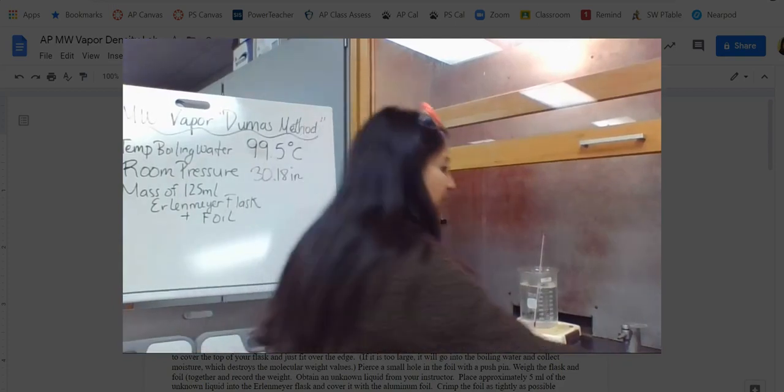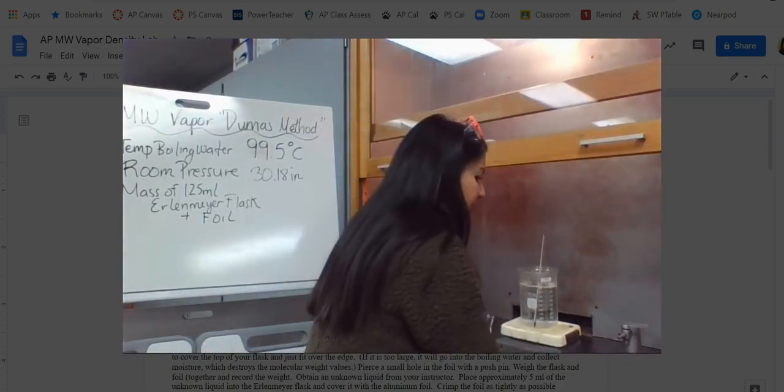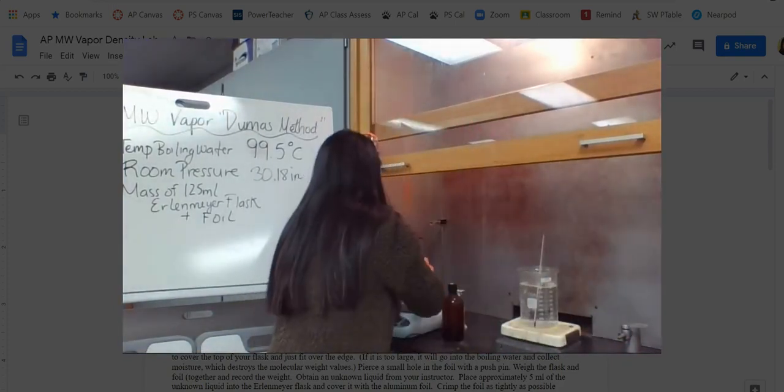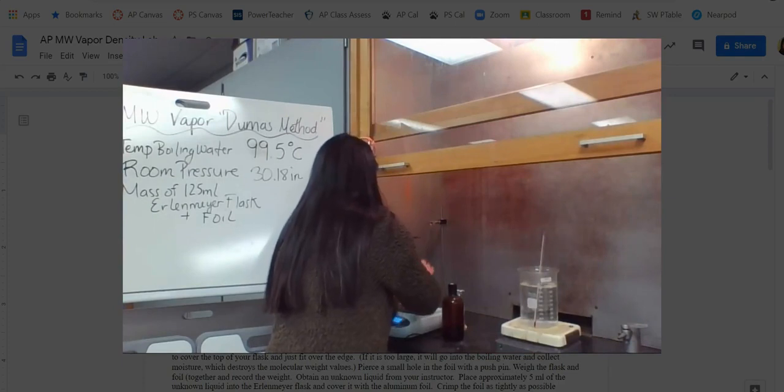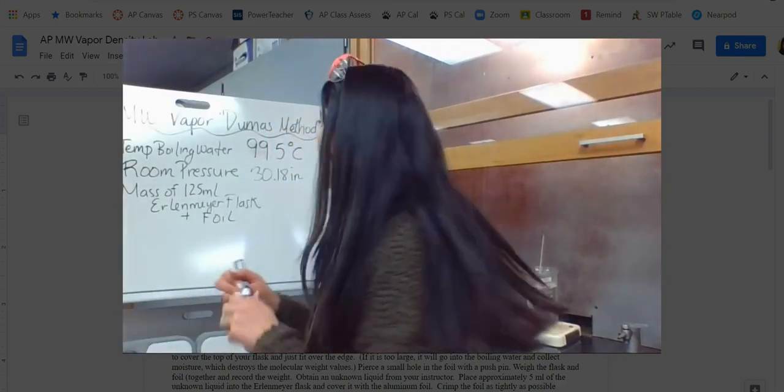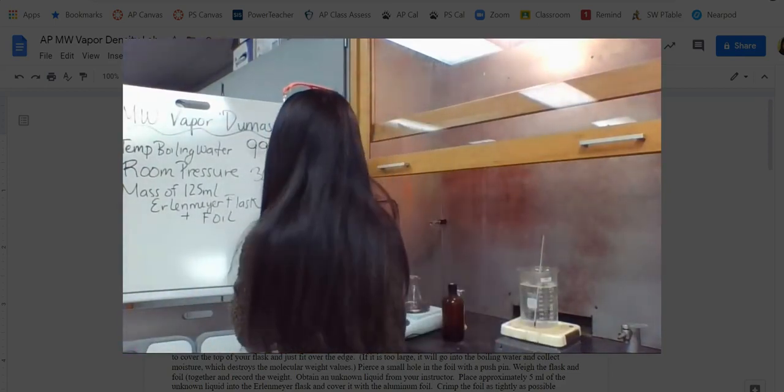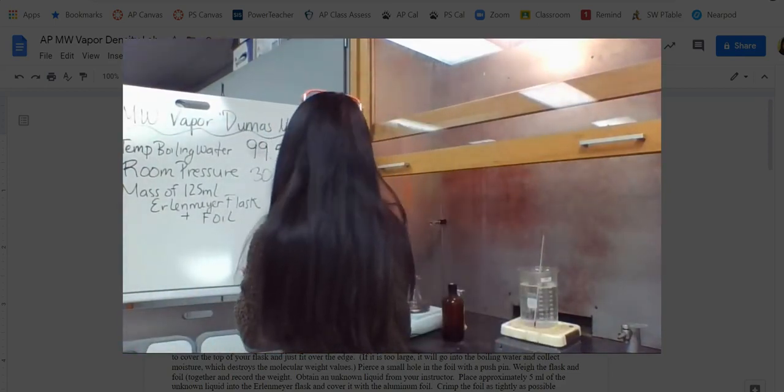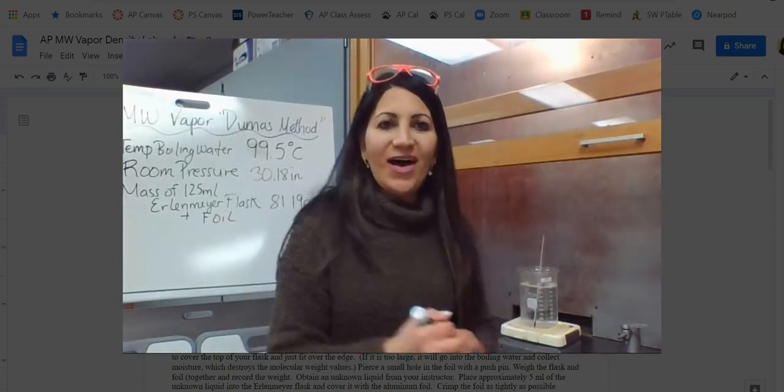Let's weigh the 125 milliliter flask along with the foil. And so I'm just going to put these together and it doesn't even have to be covered or anything. And we're looking like 81.19 grams. 81.19 grams.